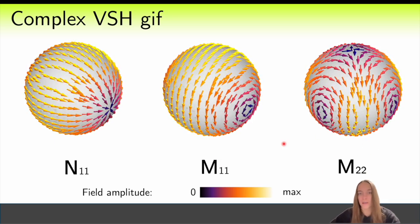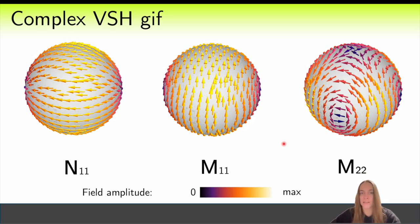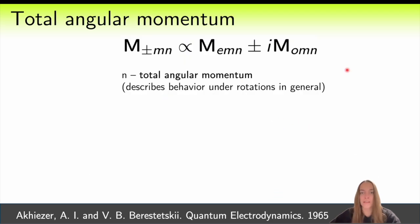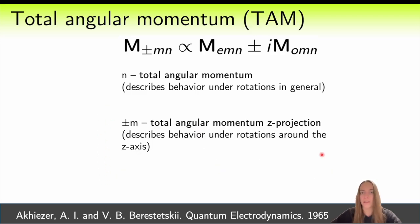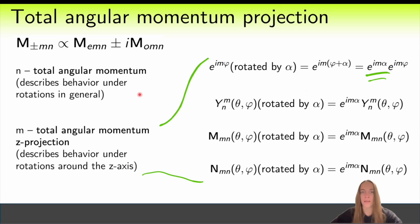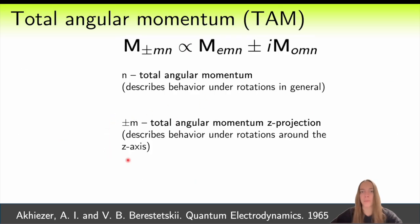For a complex harmonic, the number N represents the total angular momentum. This is rigorously shown in the book by Akhiezer. The total angular momentum is directly related to how such functions behave under rotations. Functions with a specific N value transform through each other during rotations, as we have observed earlier.